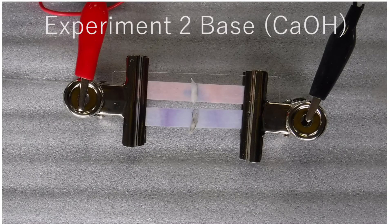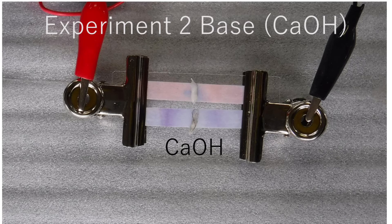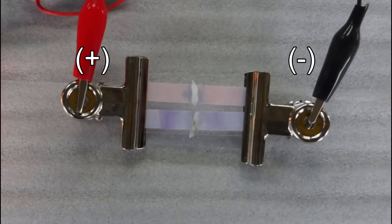Let's do the second experiment with calcium hydroxide. A small piece of cotton with calcium hydroxide is placed in the middle of the paper. The experiment is started again.